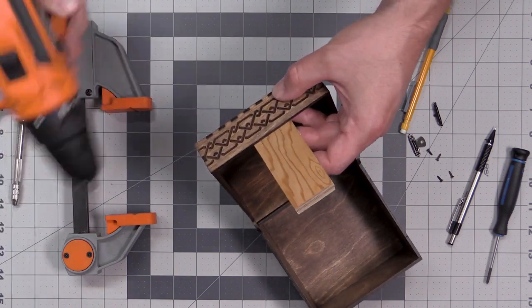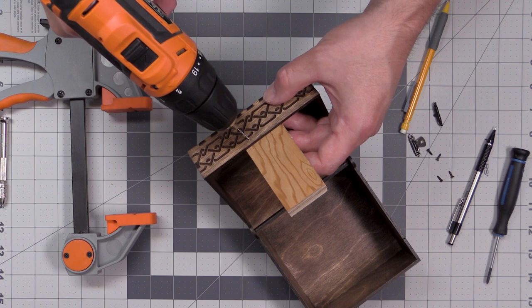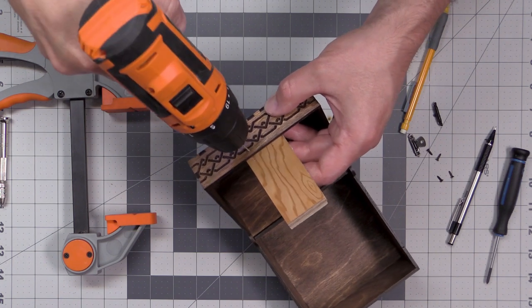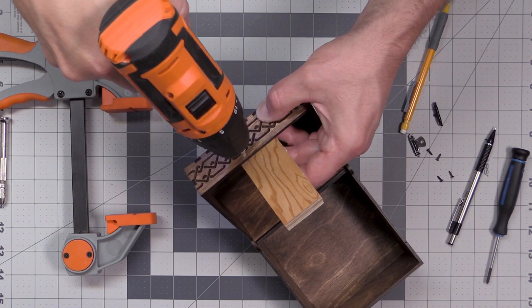I'm then going to take a piece of scrap wood and place it on the back section of where I'm going to drill out my holes. I am then going to go and drill out my holes to the desired size.